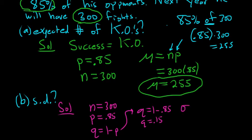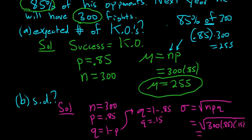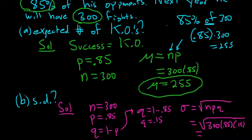Then σ is going to be equal to the square root of npq, which is the square root of 300 times 0.85 times 0.15. So if you put this in your calculator, definitely going to do that. Let's see what it is.